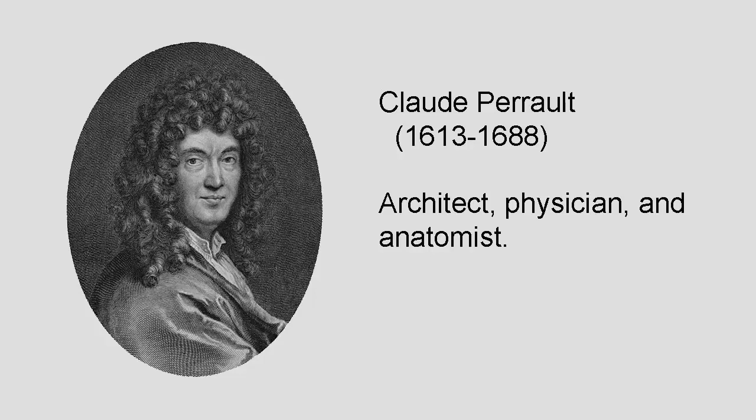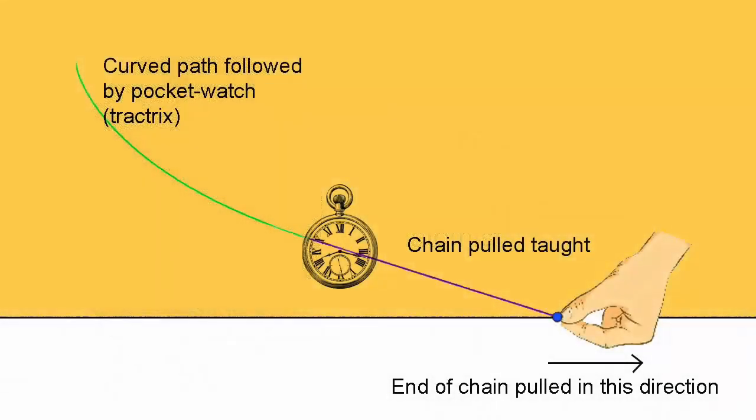In 1676, at about the time the German mathematician and polymath Gottfried Leibniz was doing groundbreaking work on the calculus, Perrault asked the question that I just did in the introduction. What's the path that a pocket watch will follow if its chain is pulled along a straight line? The answer turns out to be a curve called a tractrix.